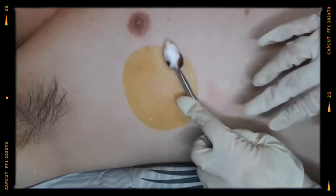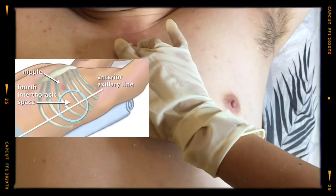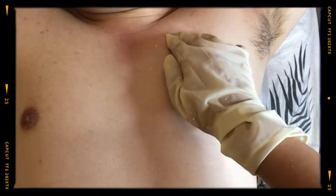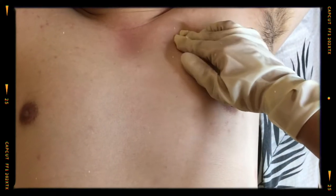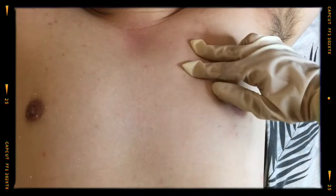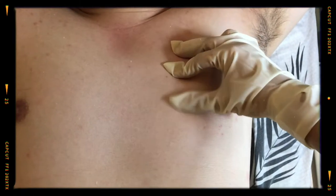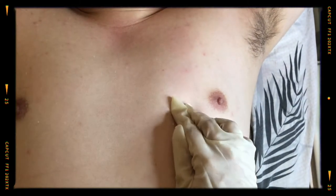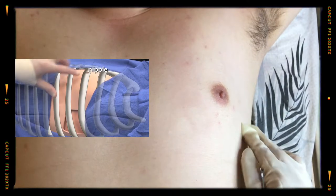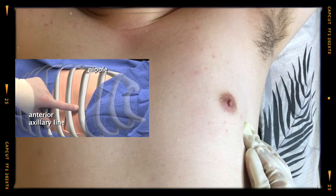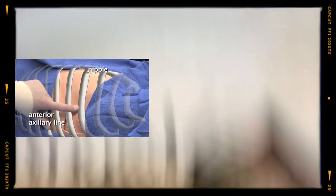Identify the fourth or fifth intercostal space at the anterior axillary line at the site of injury. We do this by identifying the sternal angle or manubriosternal joint, and the structure beside it is the second rib and second intercostal space. From this location, go down to the fourth and fifth intercostal space at the anterior axillary line.